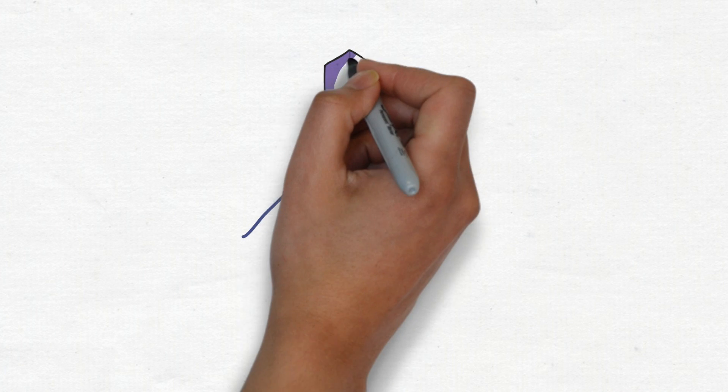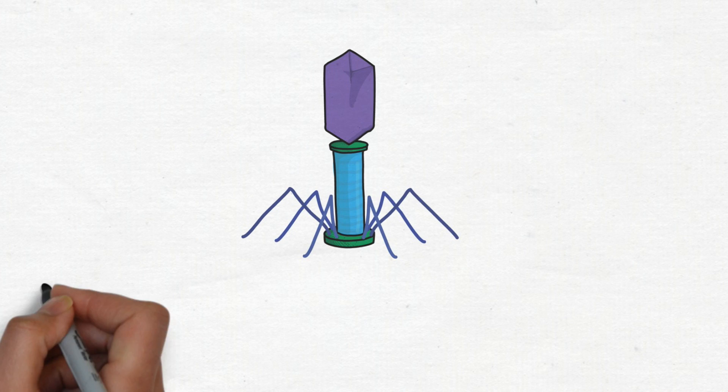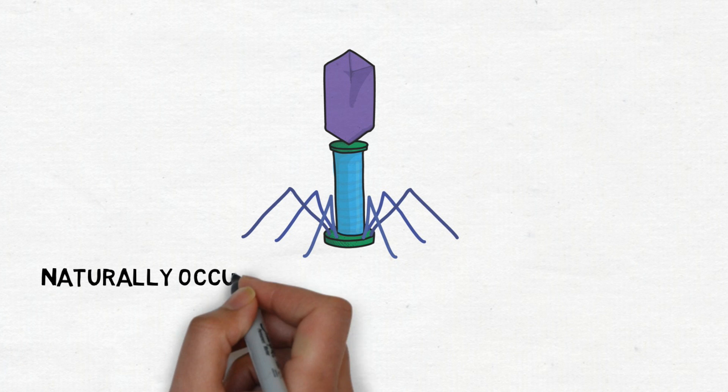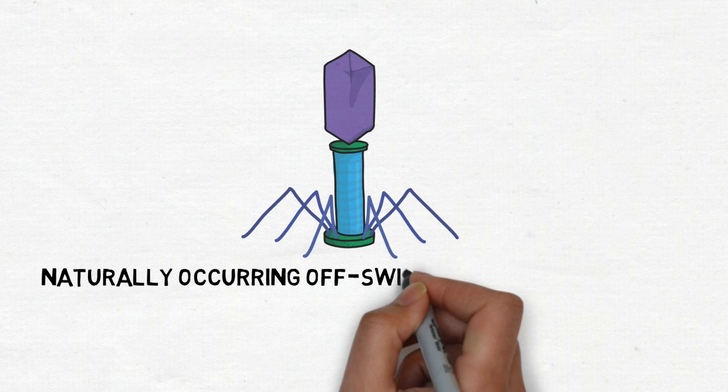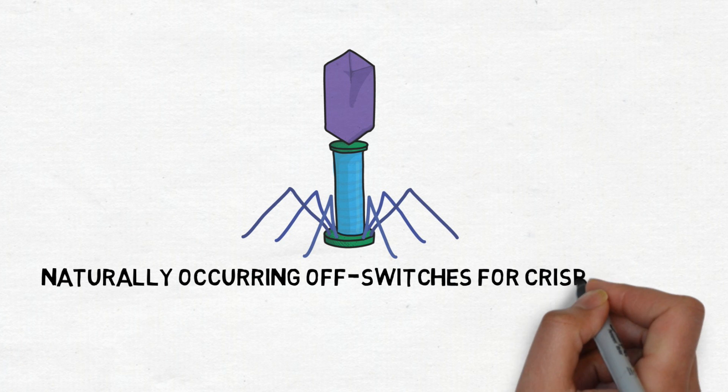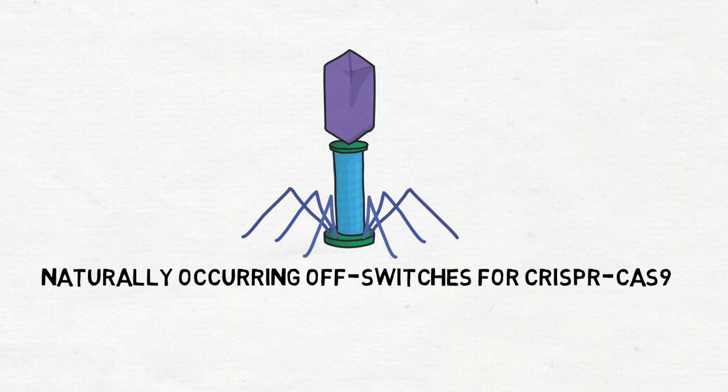How do viruses outwit bacteria in their struggle for survival? The answer provides new advances in the field of CRISPR-Cas9 gene editing and enables a fail-safe technology to treat or prevent human disease.